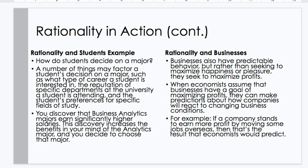Rationality and businesses. Businesses also have predictable behavior, but rather than seeking to maximize happiness or pleasure, they seek to maximize profits. When economists assume that businesses have a goal of maximizing profits, they can make predictions about how companies will react to changing business conditions. For example, if a company stands to earn more profit by moving some jobs overseas, then that's the result that economists would predict.